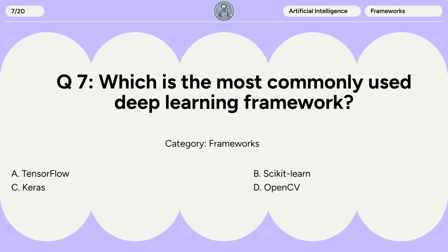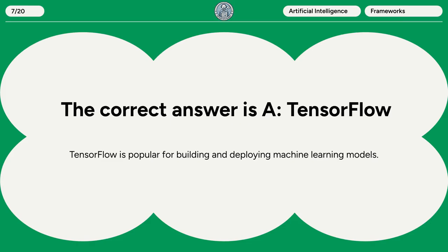Question 7. Which is the most commonly used deep learning framework? A. TensorFlow. B. Scikit-learn. C. Keras. D. OpenCV. The correct answer is A: TensorFlow. TensorFlow is popular for building and deploying machine learning models.